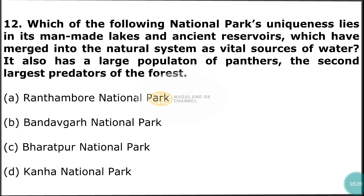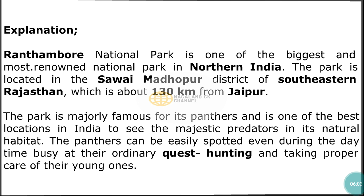Question number 12: Which of the following national park's uniqueness lies in its man-made lakes and ancient reservoirs which have merged into the natural system as vital sources of water? It also has a large population of leopards, the second largest predators of the forest. The correct answer is option A — Ranthambore National Park. Ranthambore National Park is one of the biggest and most renowned national parks in northern India, located in the Sawai Madhopur district of southeastern Rajasthan, about 130 kilometers from Jaipur. It is one of the best locations in India to see the majestic predators in their natural habitat.